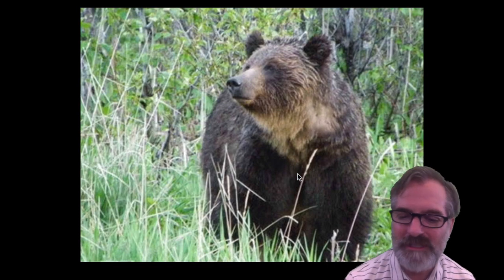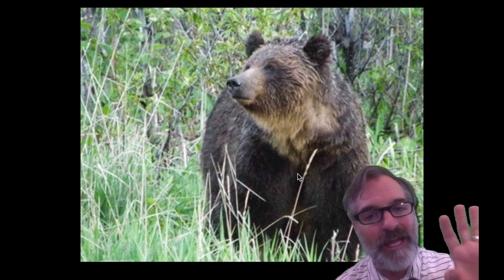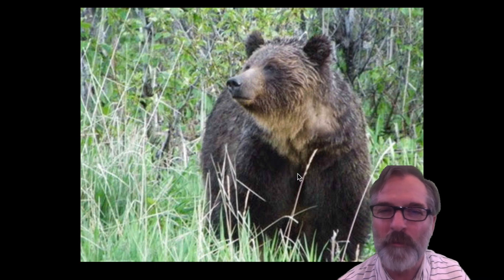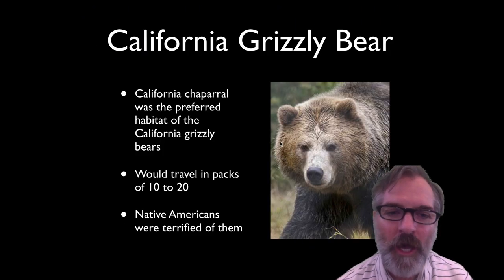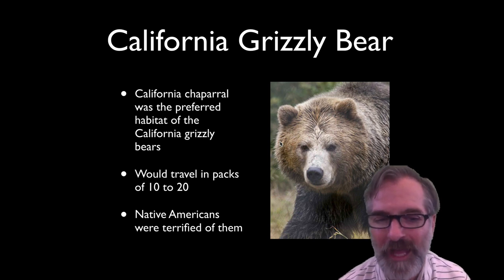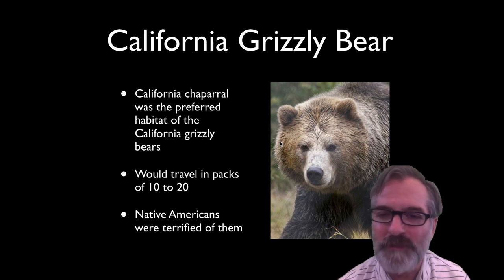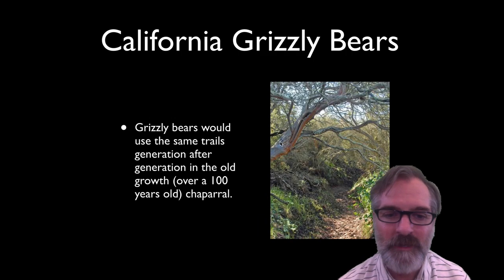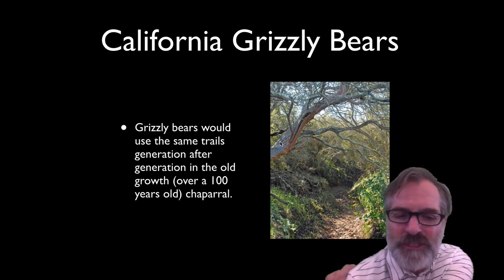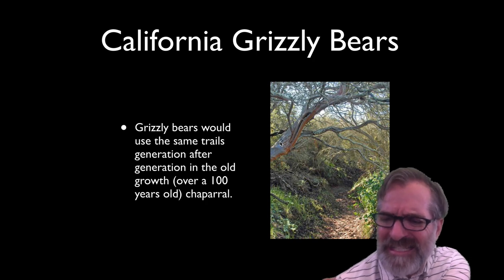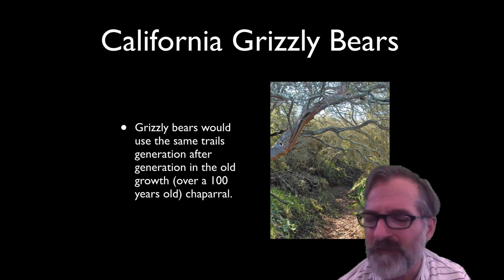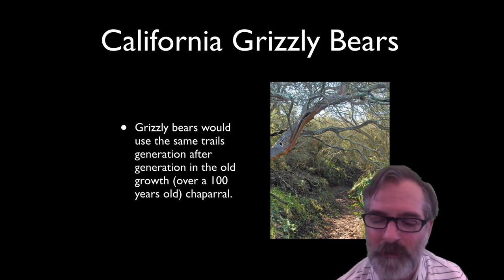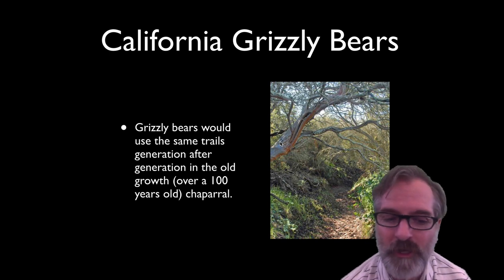And then lastly is the California grizzly bear. I don't think anyone's seen those because they're extinct now—they were wiped out. Some estimates say there were about 10,000 California grizzly bears in the state. The California chaparral was their preferred habitat and they would travel in packs of up to 10 to 20. The Native American Indians were terrified of them. The grizzly bears would use the same trails for generations, and the old growth chaparral had a lot of manzanita and bigger chaparral plants that grew for a long time.